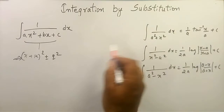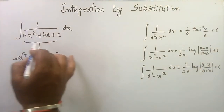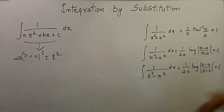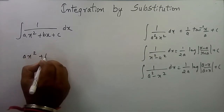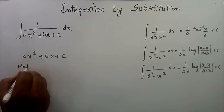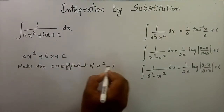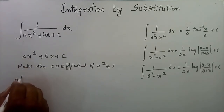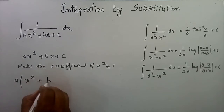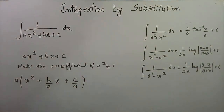If you are able to express the quadratic in that standard form, then we can use either of these three formulas for evaluation of the integral. The first step is to make the coefficient of x² equal to 1, by taking 'a' as a common factor from the whole expression, giving us a(x² + (b/a)x + c/a).